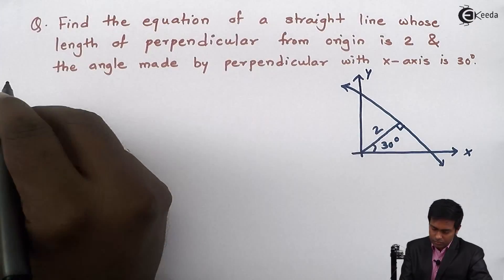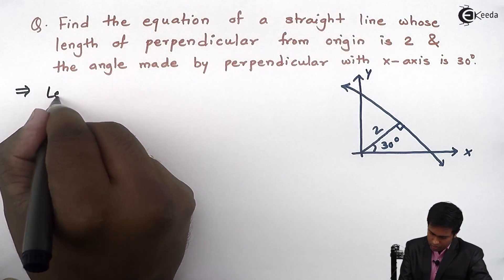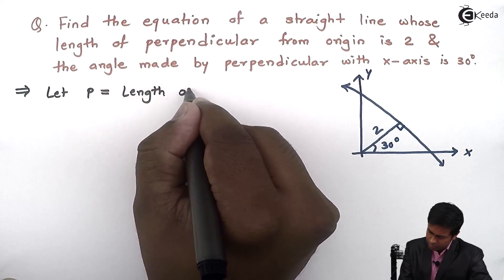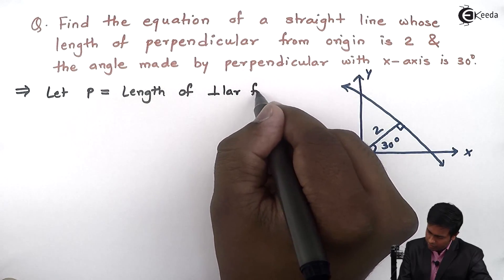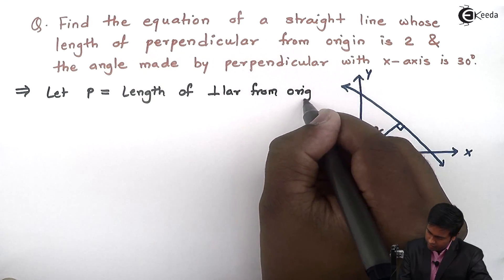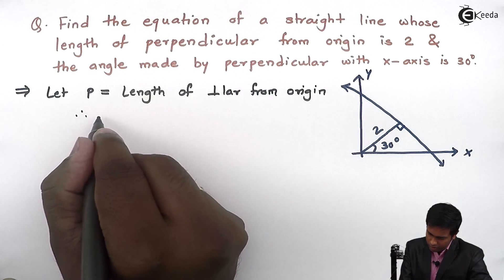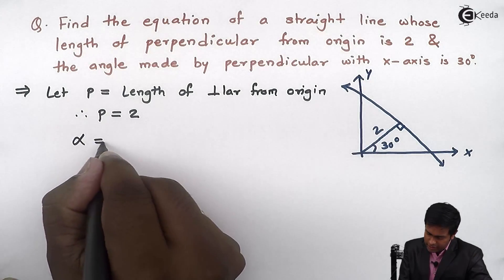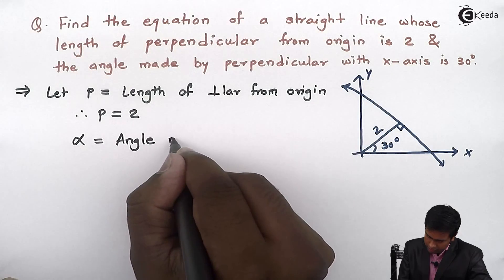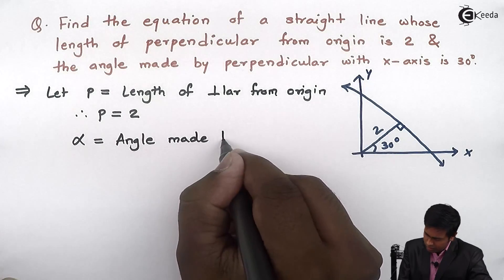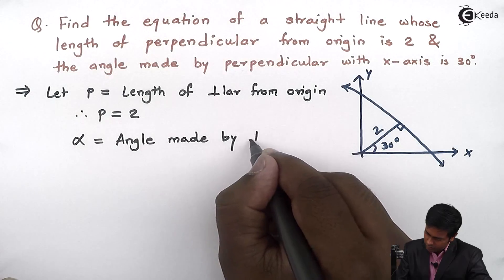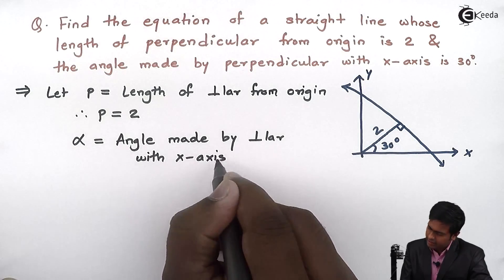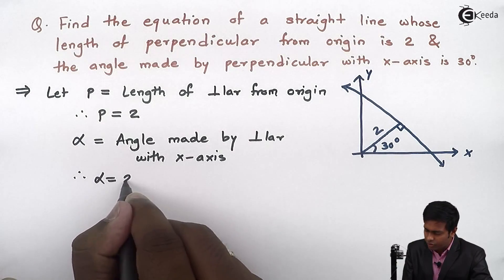Let p be the length of the perpendicular from the origin. Therefore, p is equal to 2. Let alpha be the angle made by the perpendicular with the x-axis. Therefore, alpha is equal to 30 degrees.